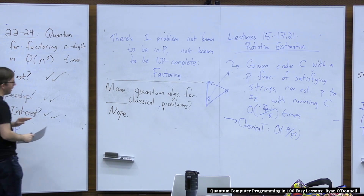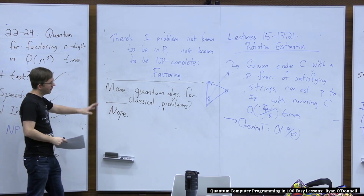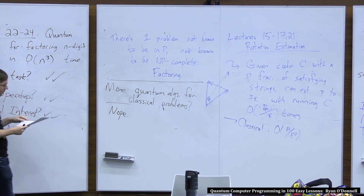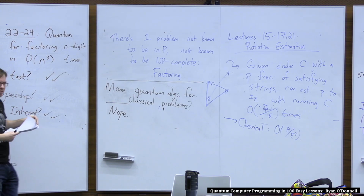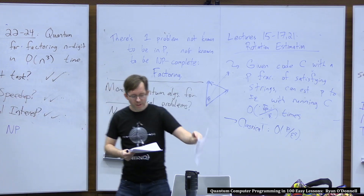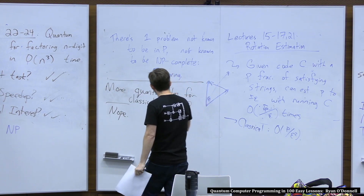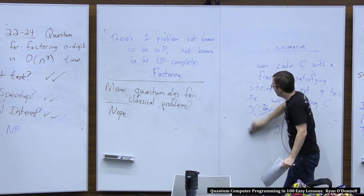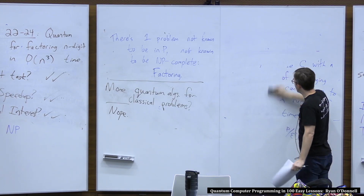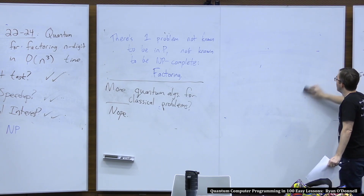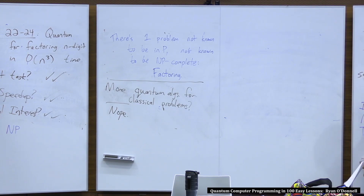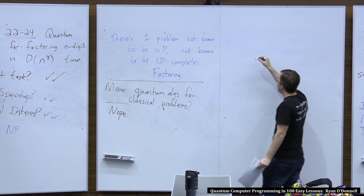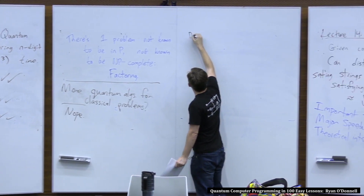Some people may take offense at this claim. They'll say that after Grover and Shor's algorithm from the mid-90s, we haven't gotten anything. Some people will say you're really selling things short — there are so many other uses of quantum algorithms for solving classical problems. And they'll point to some things we didn't discuss in this class. But I personally feel they all have some issues — they all have some kind of downsides.